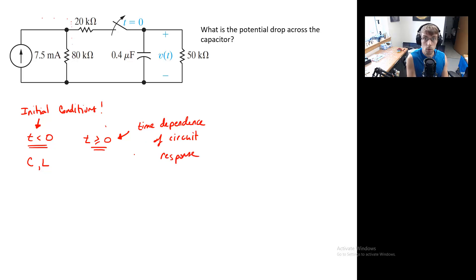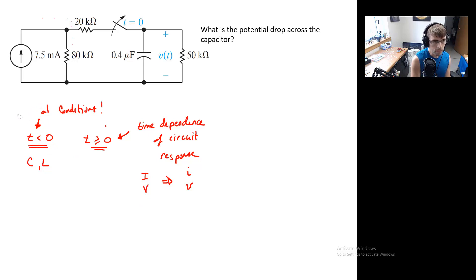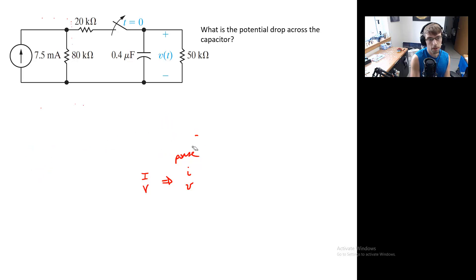Bear in mind that our book uses the convention that capital I and capital V are time-independent quantities. So we should start using lowercase i and lowercase v. We are asked to find the potential drop across the capacitor, and this will be a time-dependent quantity once the switch is opened.